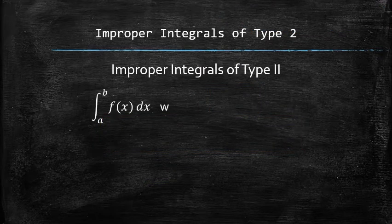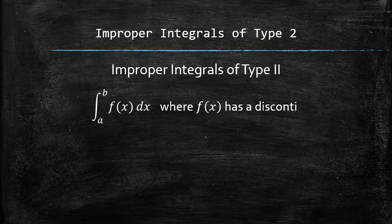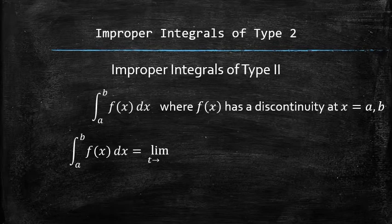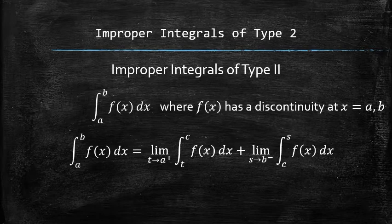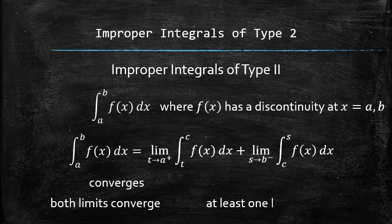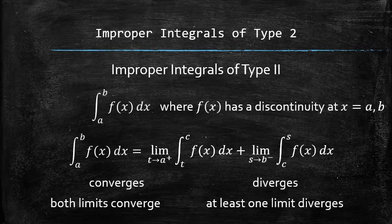Let's consider an integral with discontinuities in both upper and lower limits. In such a case, we use the subdivision property of definite integrals and, for some value c, split the original integral into a sum of two improper integrals, each of which we already know how to treat using the limits. If both limits are finite, then we say that the original integral converges. Otherwise, if at least one of the new limits is infinite or doesn't exist, we say that the original integral diverges.